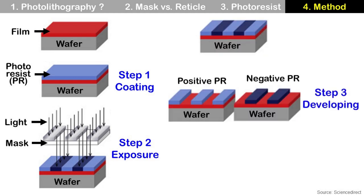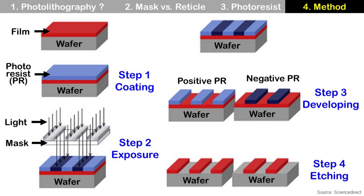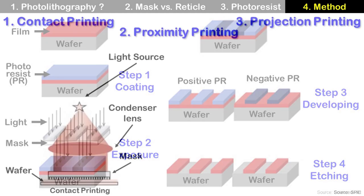Step 3 is Developing — a process to selectively remove photoresist. The exposed photoresist is removed for positive photoresist, and the unexposed photoresist is removed for negative photoresist. Step 4 is Etching — a process to remove the film on the wafer, so film not covered by photoresist is removed.